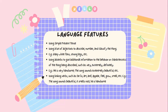Jadi semua kata sifat itu harus berurutan sesuai dengan rumusnya yaitu dosaskom, atau kata lainnya adjective in order. Contohnya: sharp, wide, fence — atau strong legs, kaki yang kuat. 'Strong' adalah adjective dan 'legs' adalah noun. Next, using adverbs to give additional information to the behavior or characteristic of the things being described, such as very, extremely, and definitely.